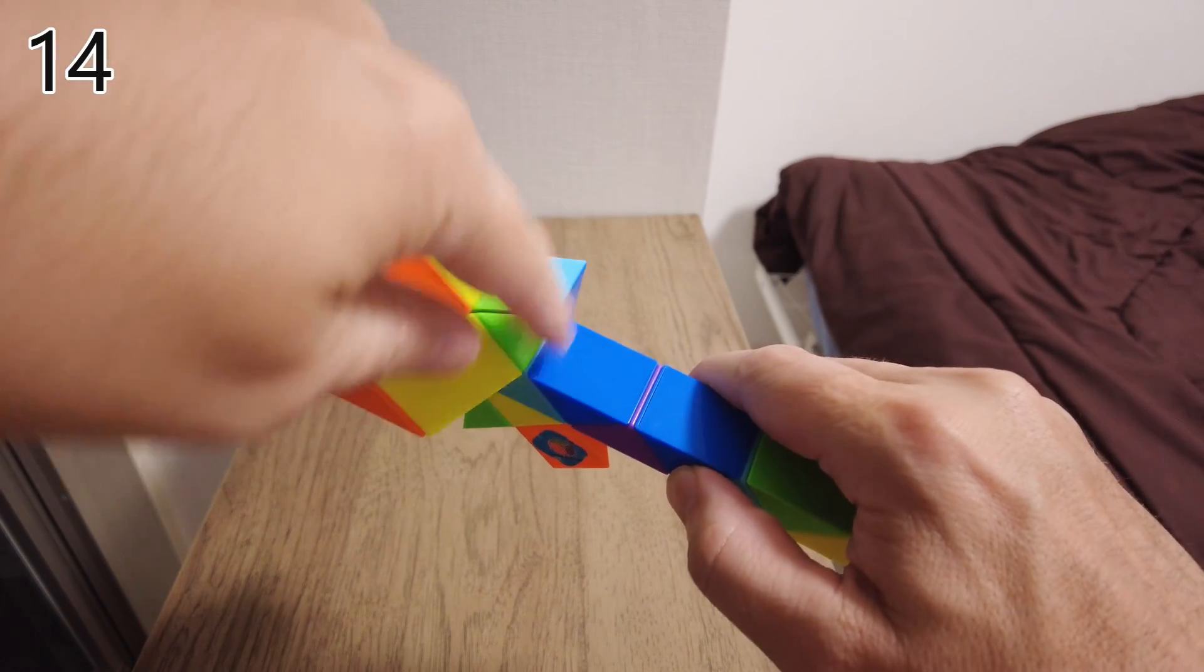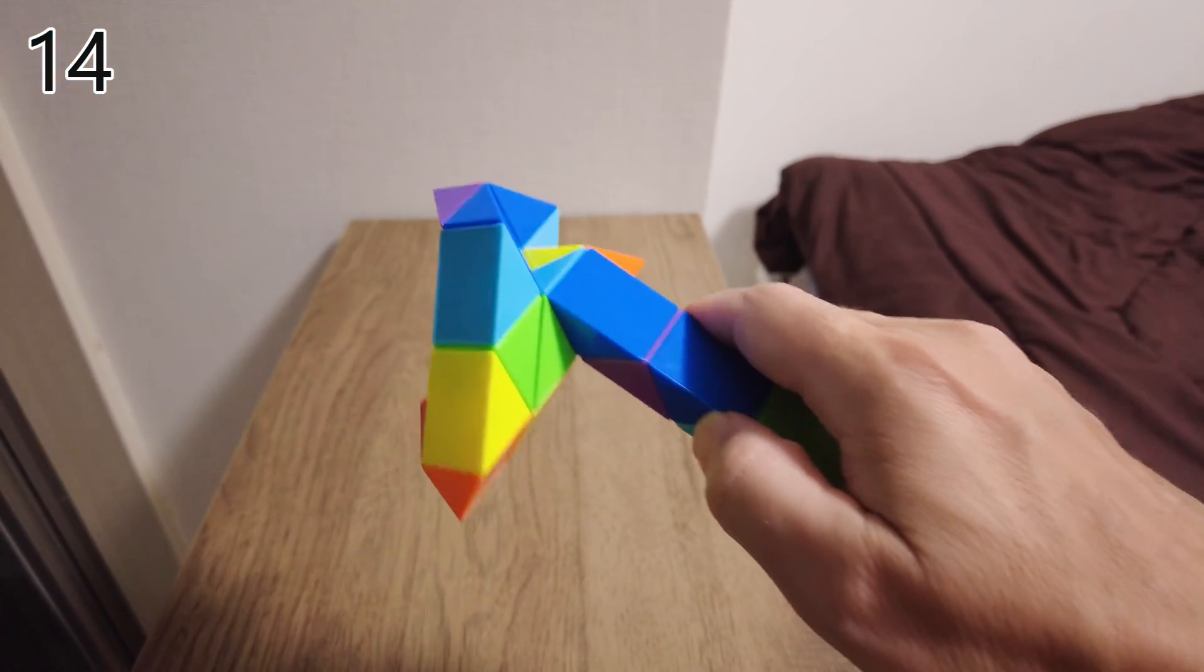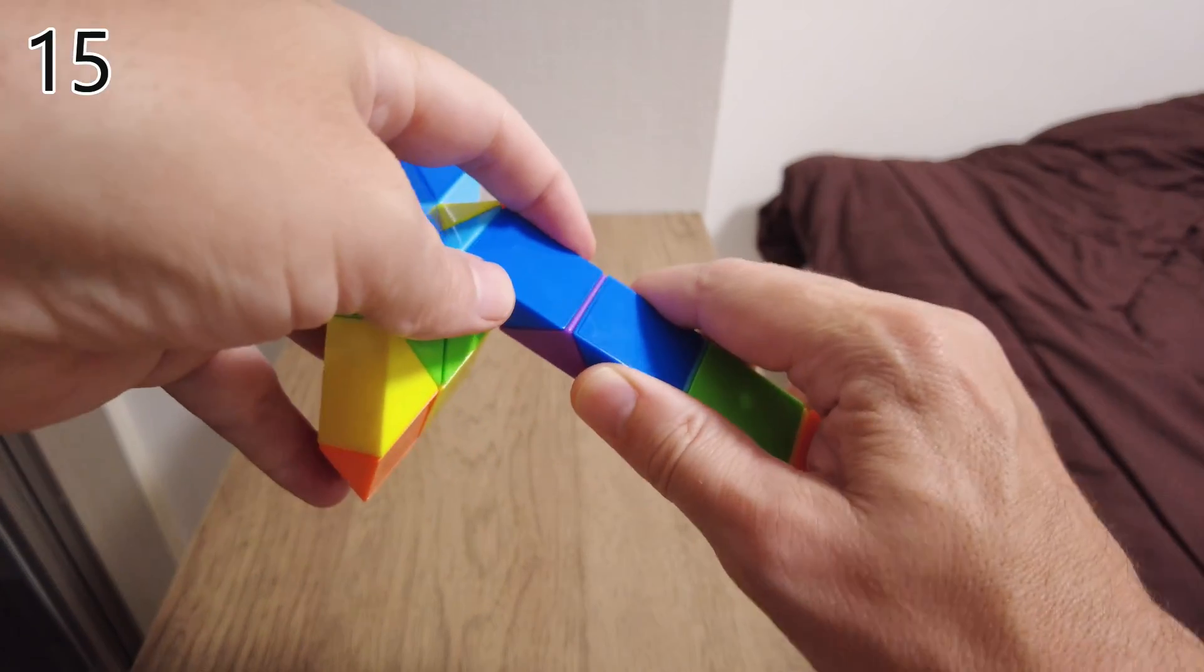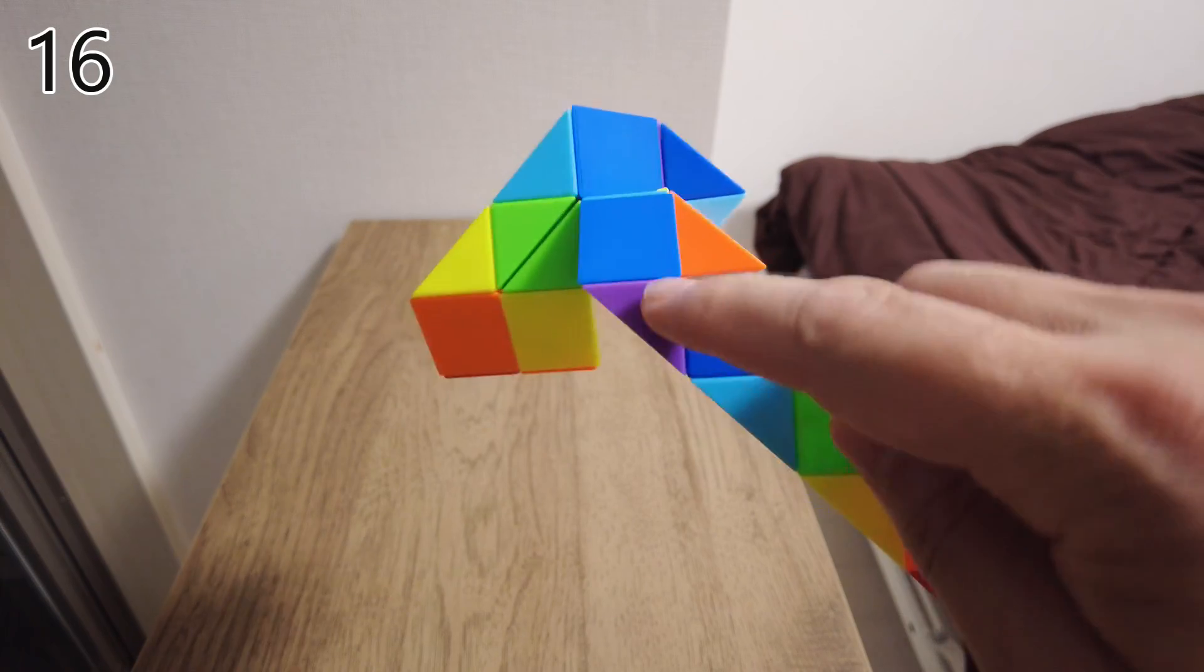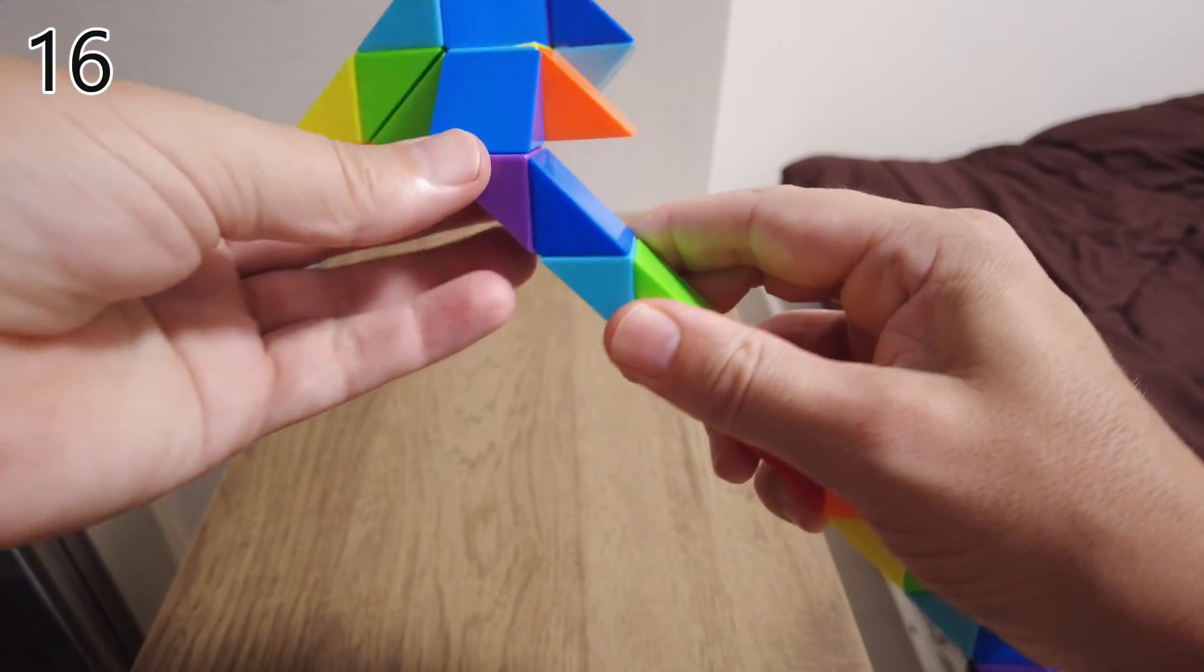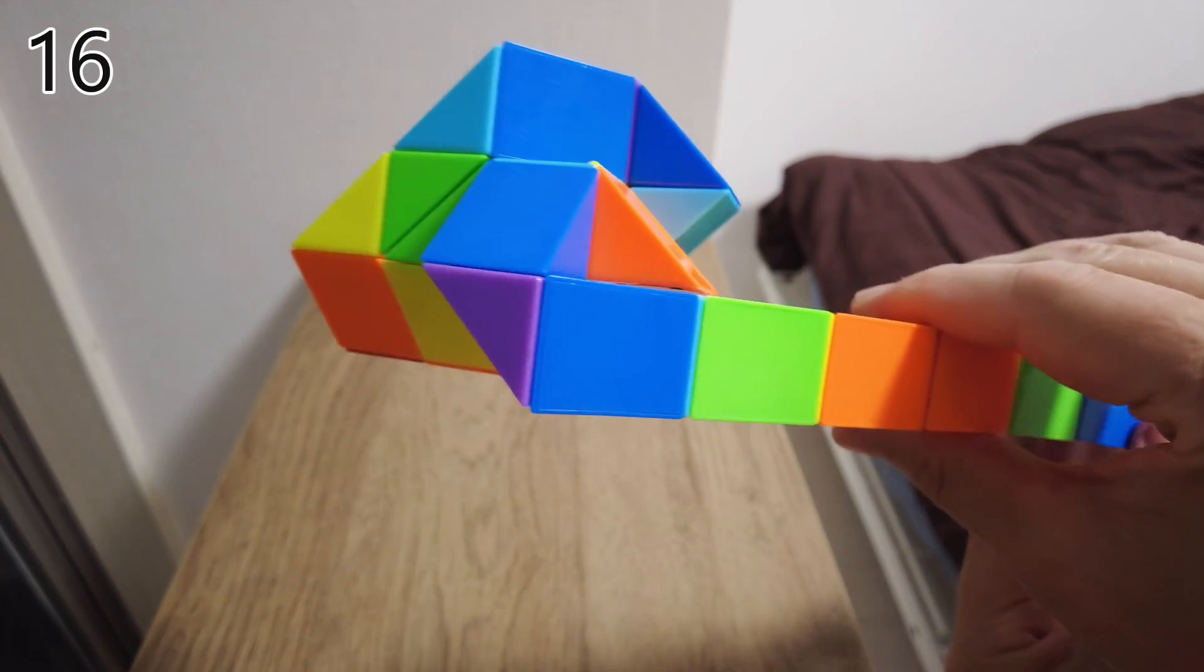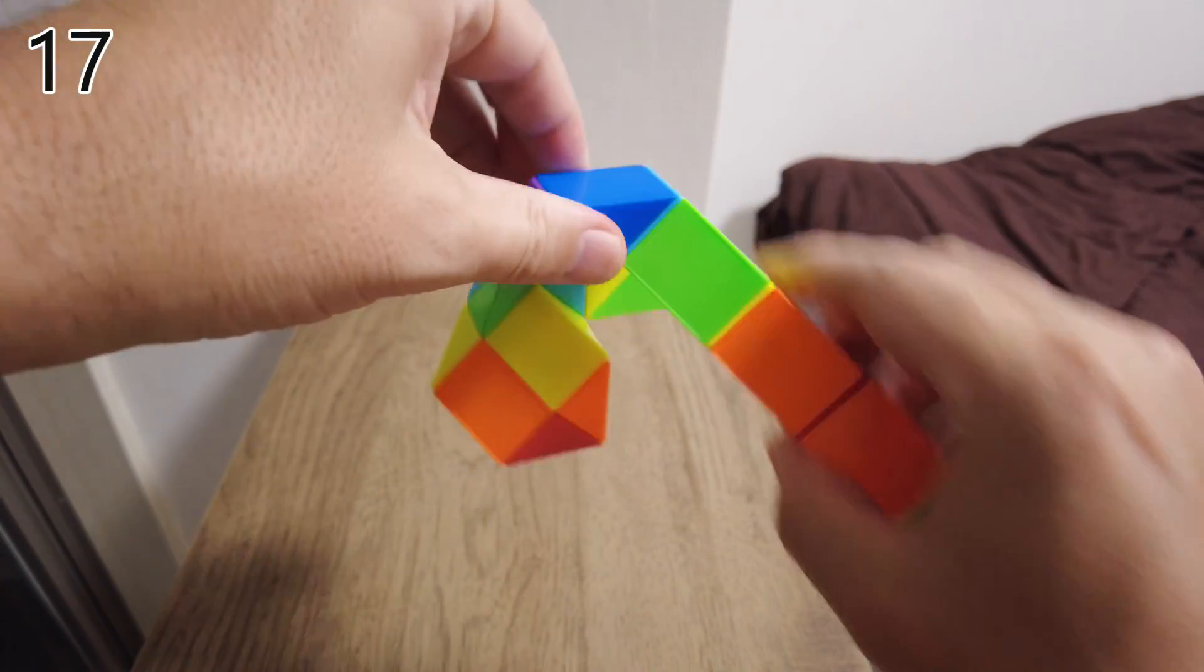Now we rotate here, one click. Here, bend it away from you, one time. Now this join, bend the arm away from you. This join one click towards you, like that.